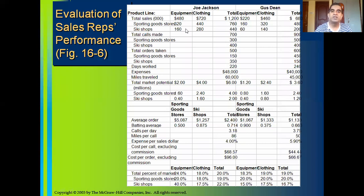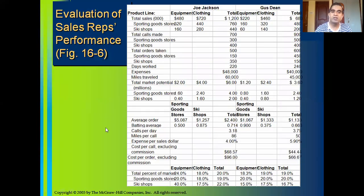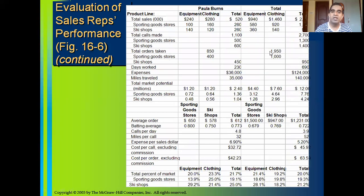What you can see here is: the first three columns belong to Joe Jackson, who is allocated to the Rocky Mountain region. Gus Dean is allocated to the Pacific Northwest — it is his performance. And Paula Burns is allocated to the New England region — it is her performance.